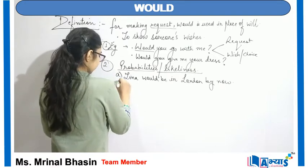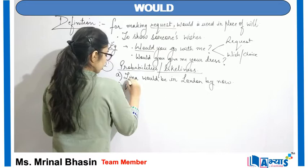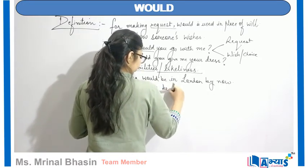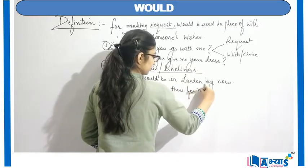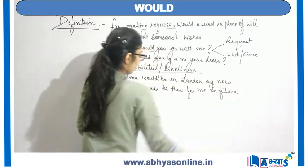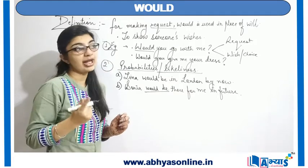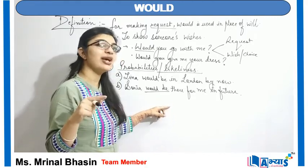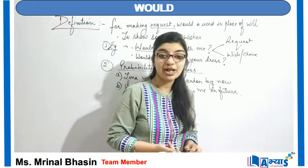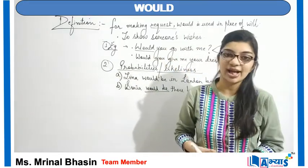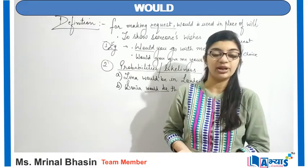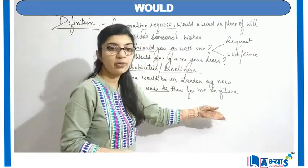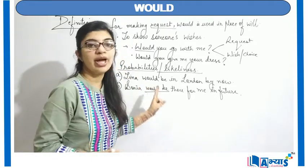Another example: 'Sonia would be there for me in future.' Again, I am making an assumption — Sonia is my friend, my confidant, and she would be there with me in future. But I am not sure; there might be some chance of misunderstandings. But looking at the bond we have, I am making a probability that she would be there for me in future as well. This is the second area where 'would' can be used.